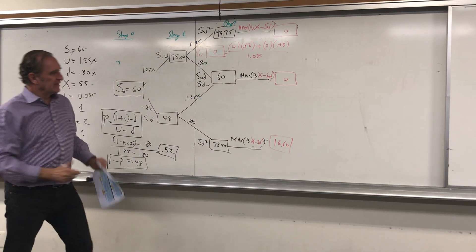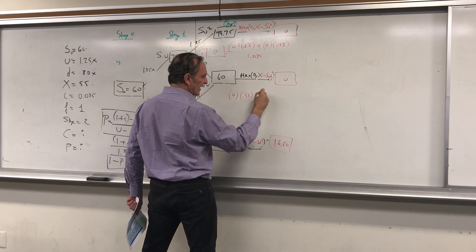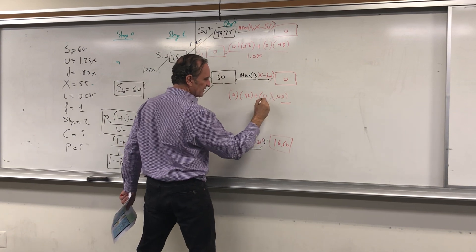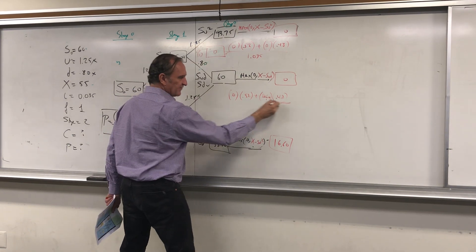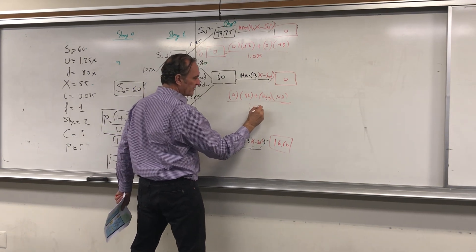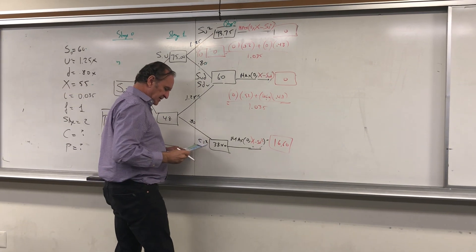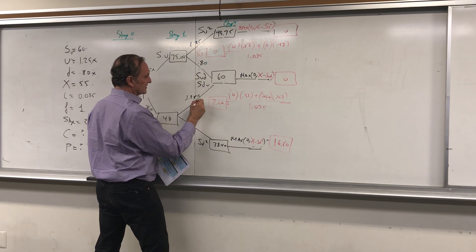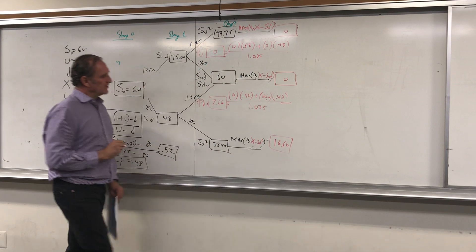Then we do the next one: 0 times 52% plus 16.60 times 48%, divided by 1.35. If I do the calculation I get 7.66, and that's p down.